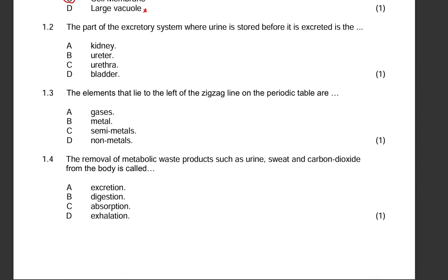Then we go to 1.2: the part of the excretory system where urine is stored before it is excreted. I'm underlining these words because I need to understand the statement so that I understand what my question is about. So here we are talking about a part in the excretory system where urine is stored before it is excreted. I think the correct answer here is D. We know that urine is stored in the bladder before it is excreted out of our body.